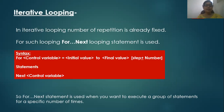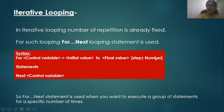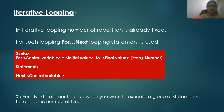You can see the syntax here. The syntax — that is, the format in which you use the looping statement — is: FOR, then a control variable, then an equal sign, then the initial value, then TO, then the final value. The optional part, shown in square brackets, is STEP. After that, you write the group of statements you want to execute. Finally, you end the loop with the NEXT statement followed by the same control variable you used with FOR.